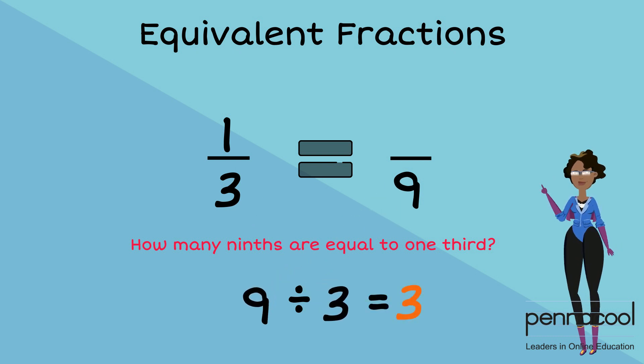This means our numerators are related by the multiple of 3 as well. We multiply the numerator 1 by 3 to give us 3. Therefore, 1 third is equivalent to 3 9ths.